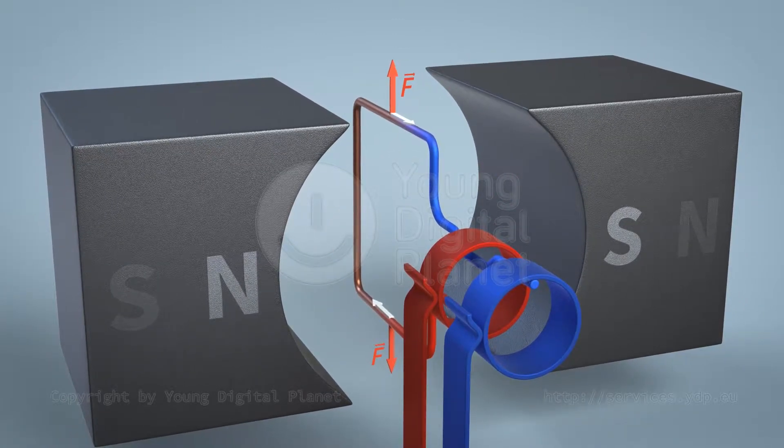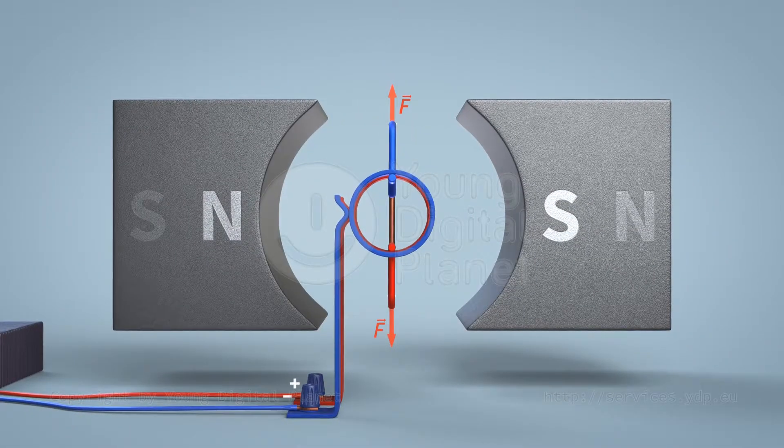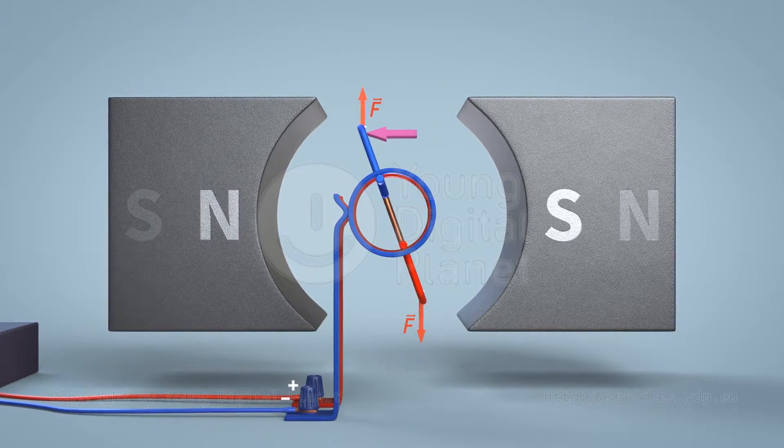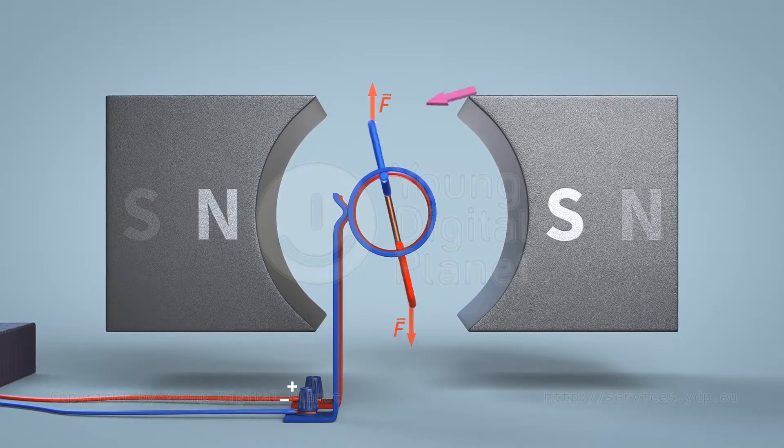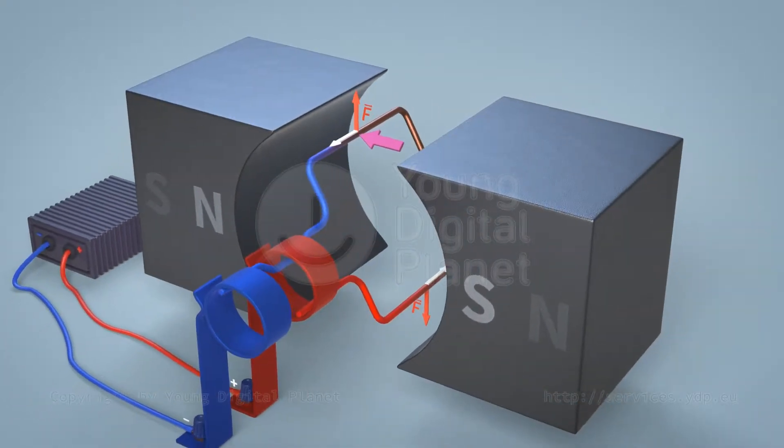This rotary motion of the frame continues until the force vectors are in the same plane. Now, even if the frame is deflected by an external force, it will return to its equilibrium position. A motor built this way will not work.